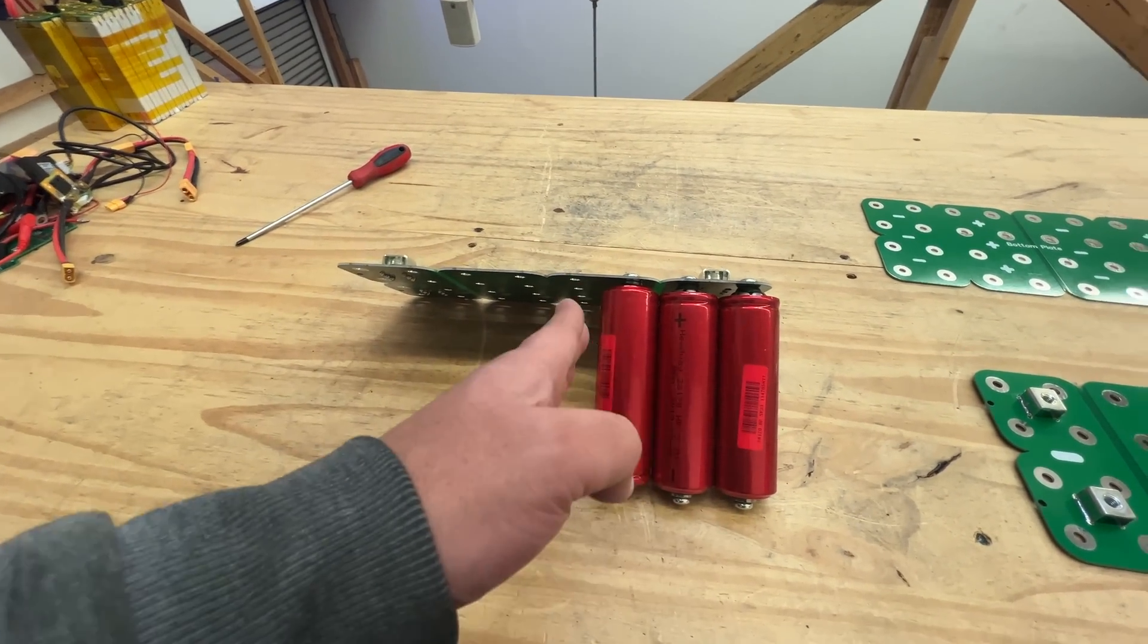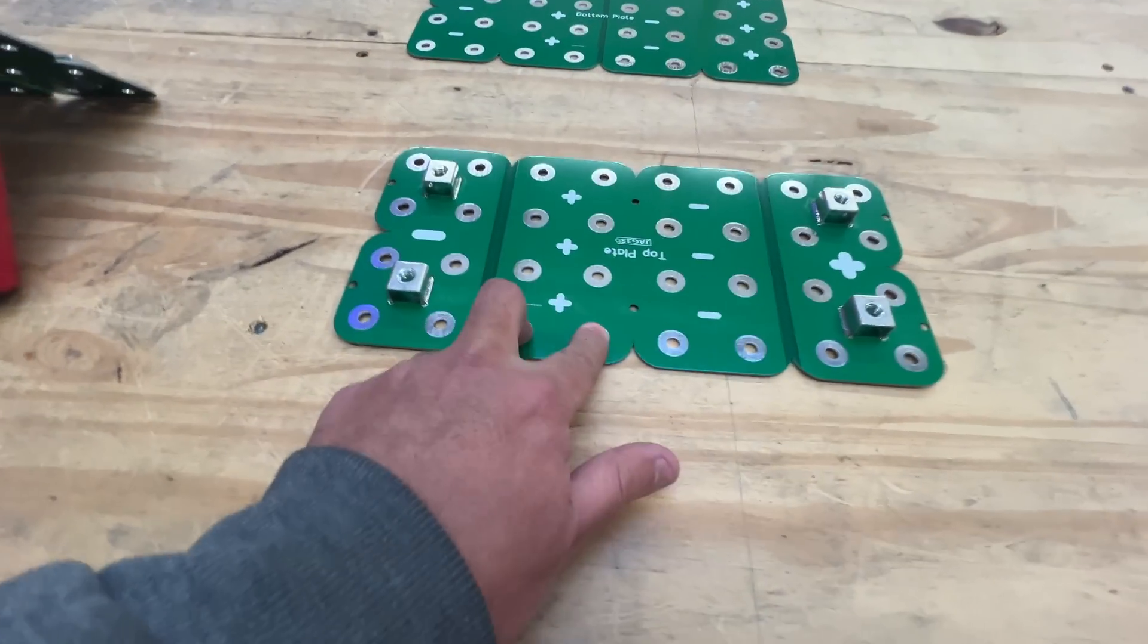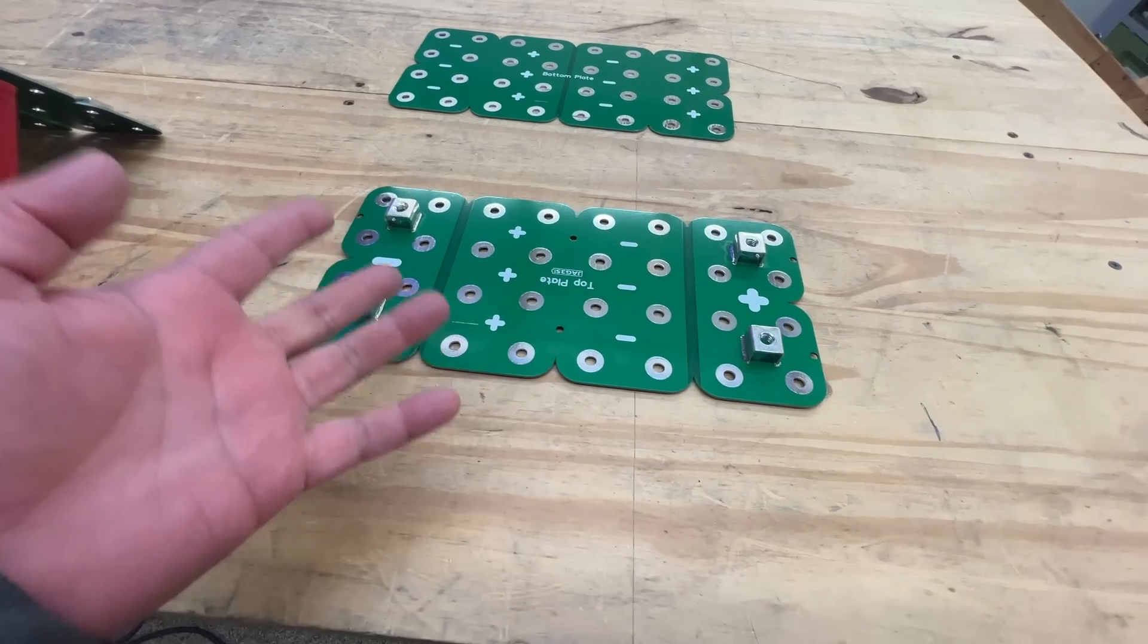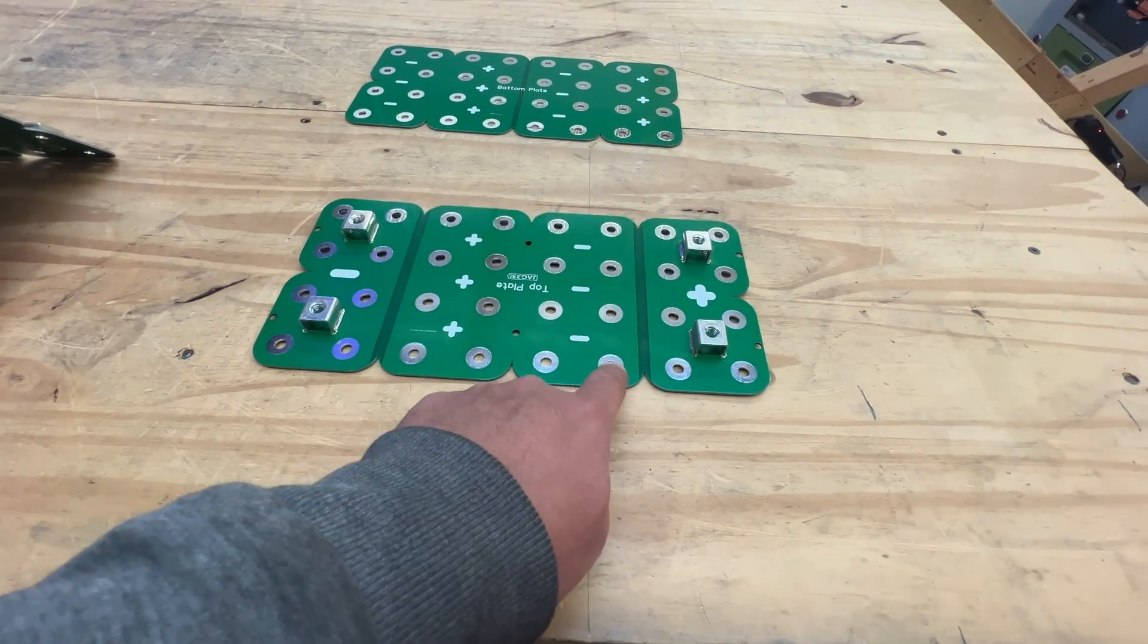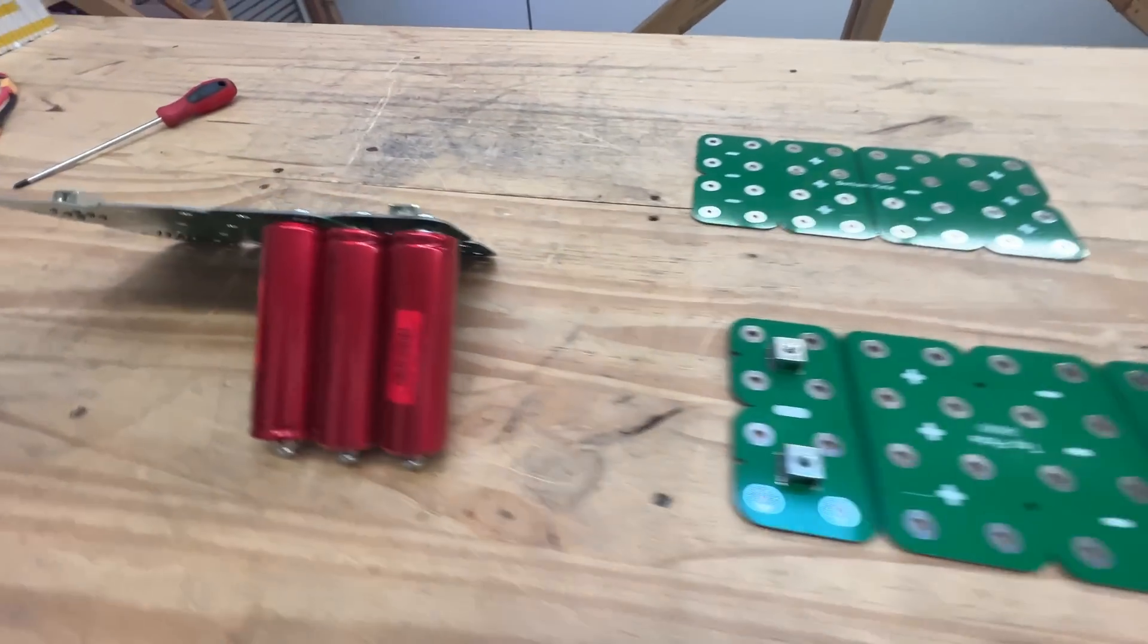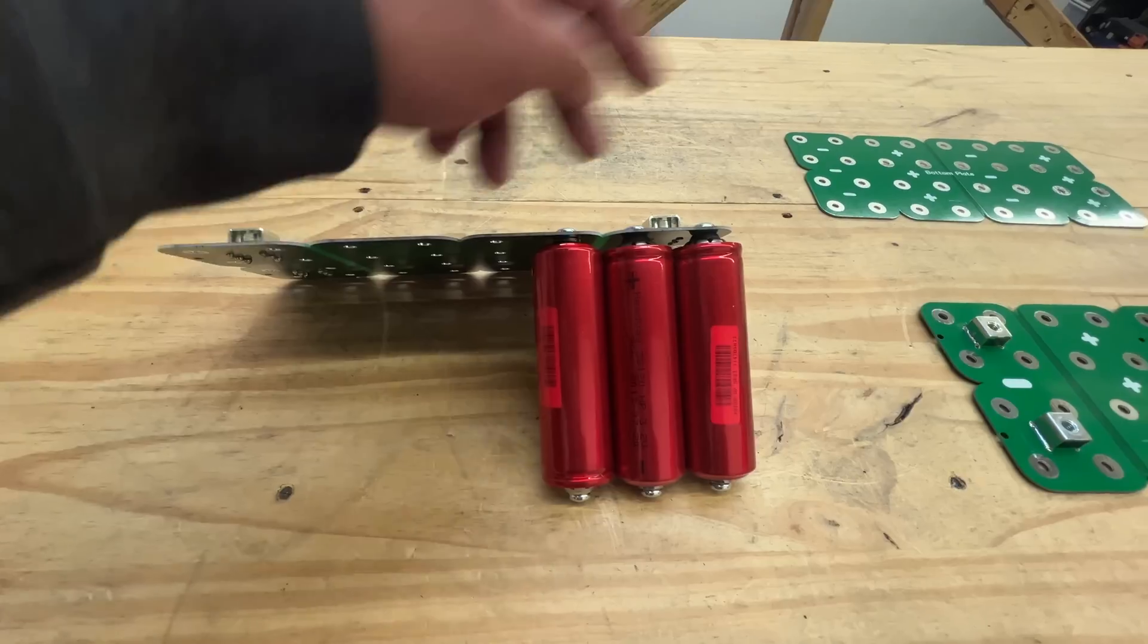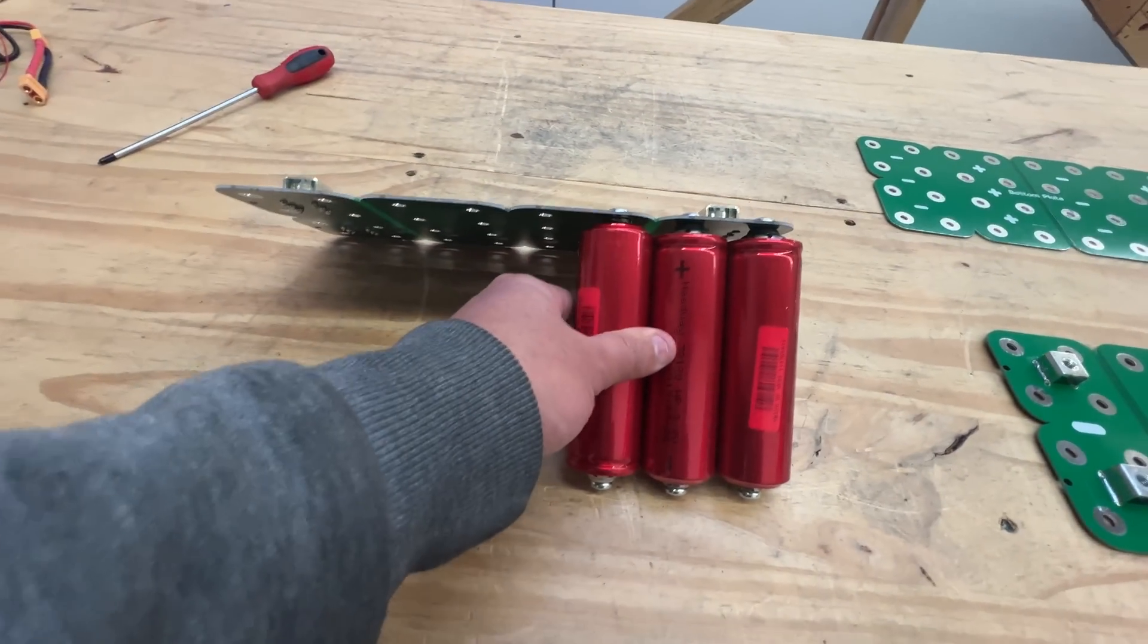And so in order to eliminate that, what I would have to do then is I would have to change the distance between these. Right now, these originally, the bus bars I made of aluminum had the same distance between all of these. They were kind of symmetrical. And so that would always be the case. And so I would have to change that. The distance here would have to be bigger to be able to do this thing in here.